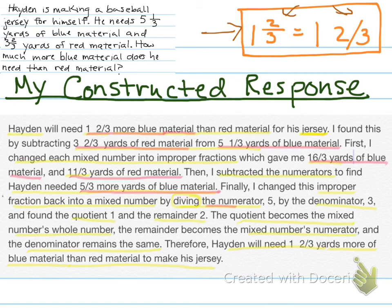I said numerator 5, denominator 3, quotient 1, remainder 2. Now, remember — those didn't have red or blue material attached to those numbers, but I did describe what they were: the numerator was 5, the denominator was 3, the quotient was 1, the remainder was 2. And then any other numbers? 1 and ⅔ yards more blue material.